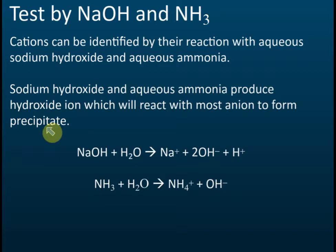For example, magnesium — magnesium ion is colorless, so when it forms a precipitate, it will form a white precipitate. Iron 2 is green in color, so when iron 2 ions form a precipitate, it will form a green precipitate. Iron 3 is brown in color, so when it forms a precipitate, it will form a brown precipitate.